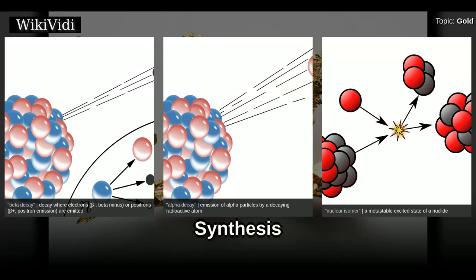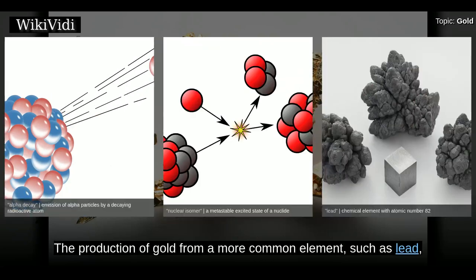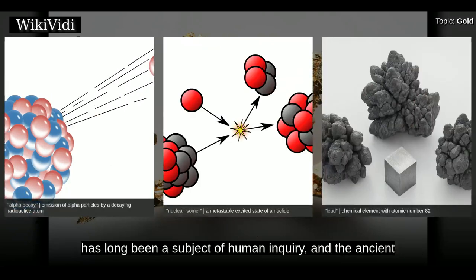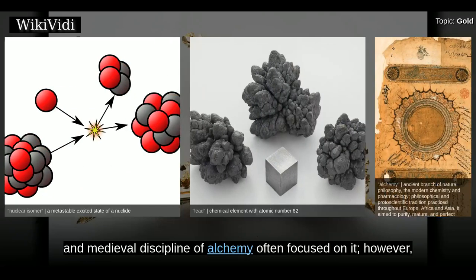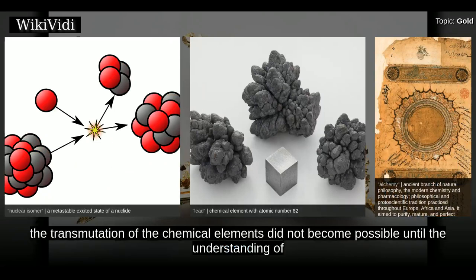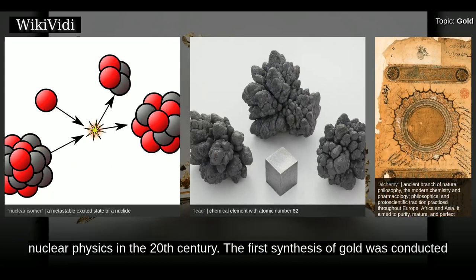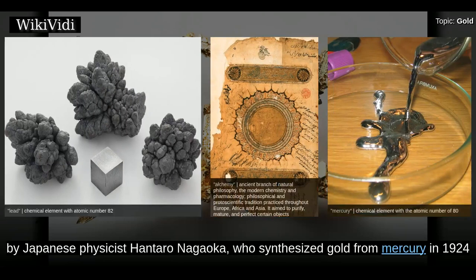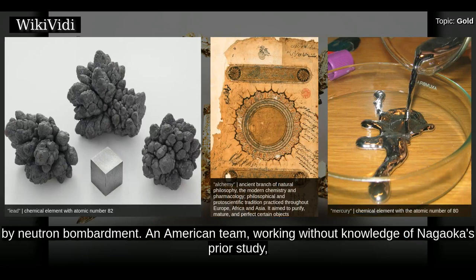The production of gold from a more common element such as lead has long been a subject of human inquiry, and the ancient and medieval discipline of alchemy often focused on it. However, the transmutation of the chemical elements did not become possible until the understanding of nuclear physics in the 20th century. The first synthesis of gold was conducted by Japanese physicist Hantaro Nagaoka, who synthesized gold from mercury in 1924 by neutron bombardment.